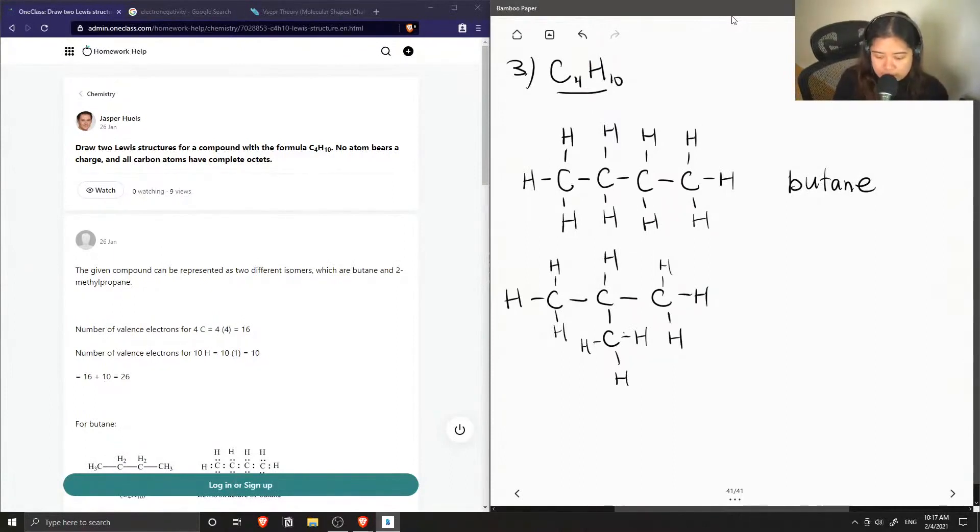This is also C4H10. To name it, we would number the carbons 1, 2, and 3. On carbon 2, we have a methyl group, so this is called 2-methyl. The 3-carbon chain tells us that it is propane. So 2-methyl propane.